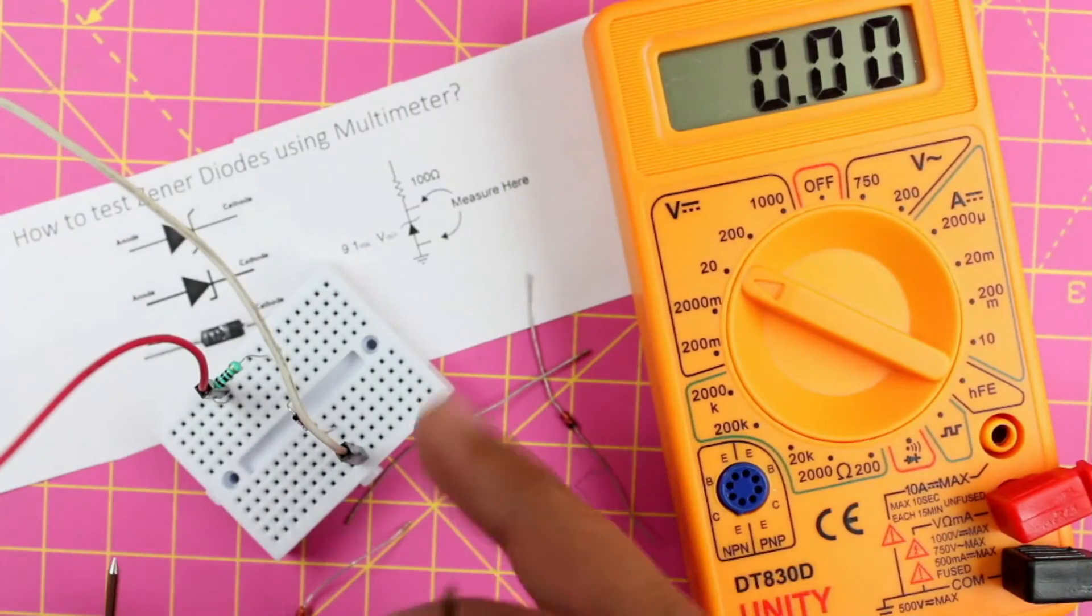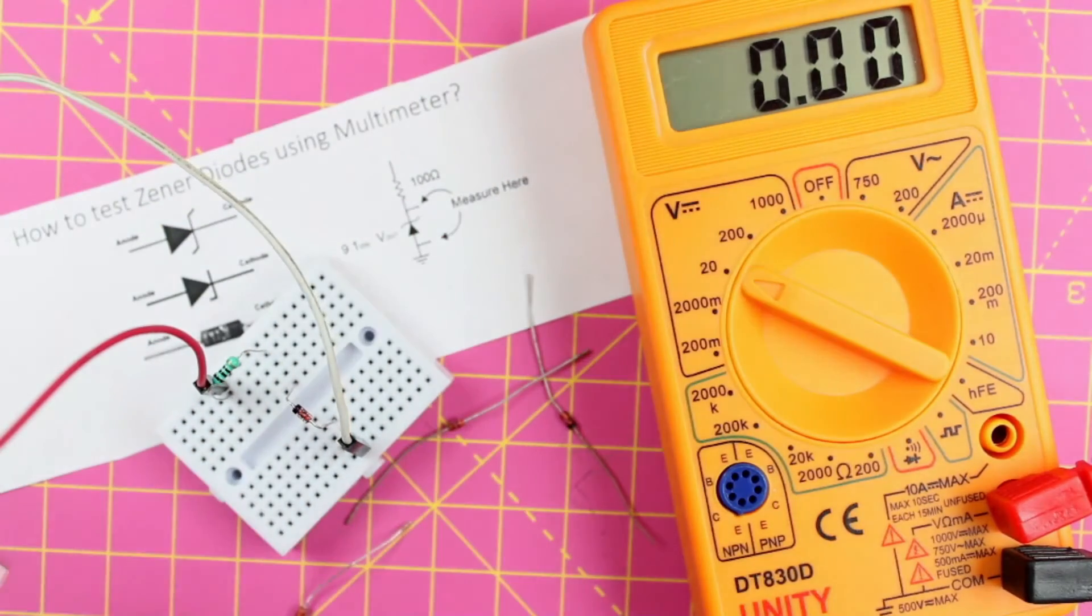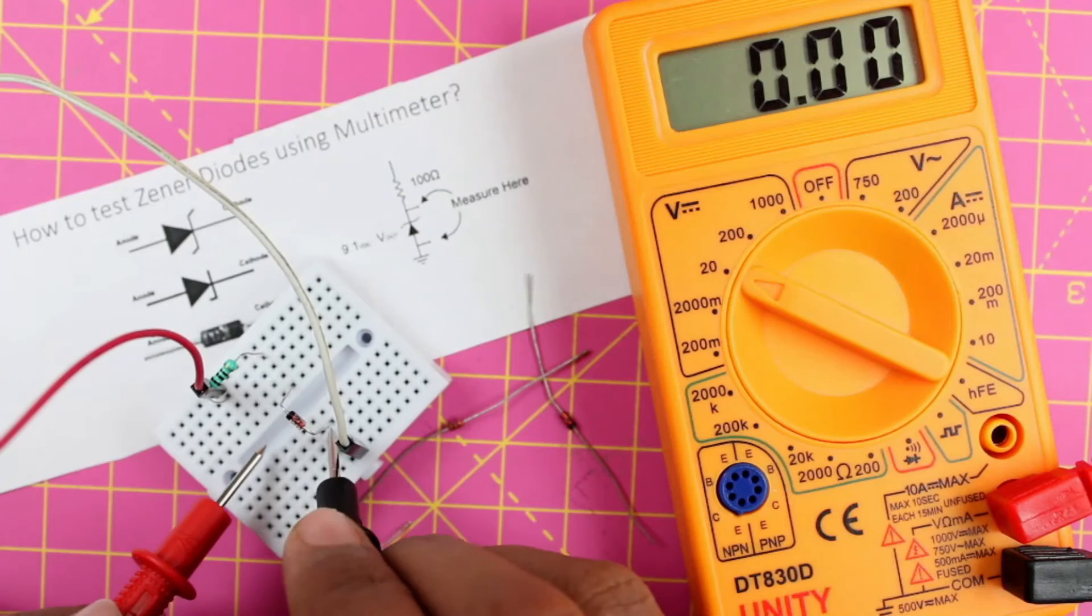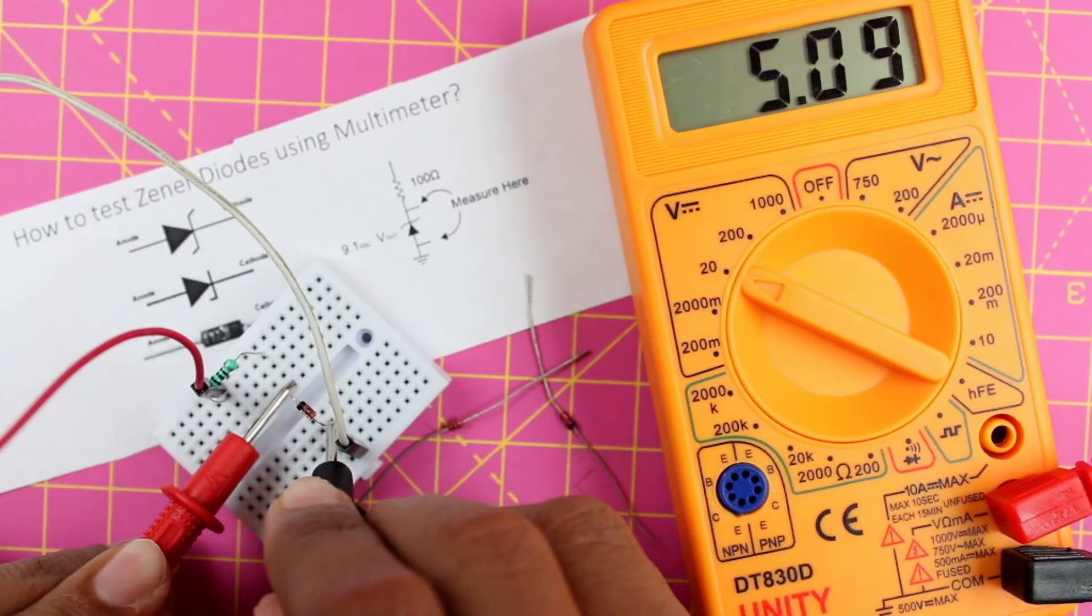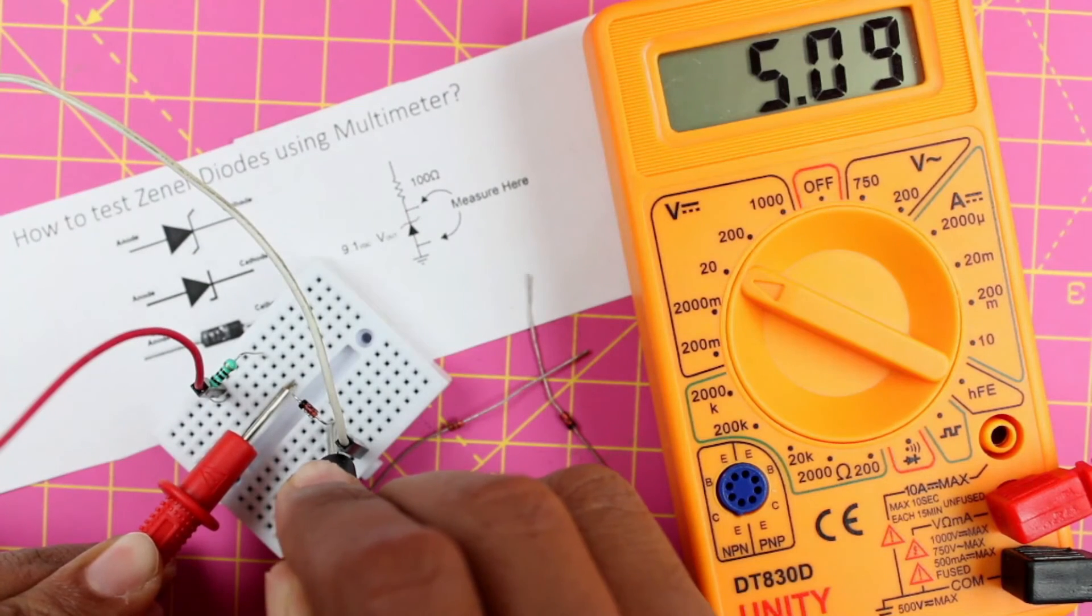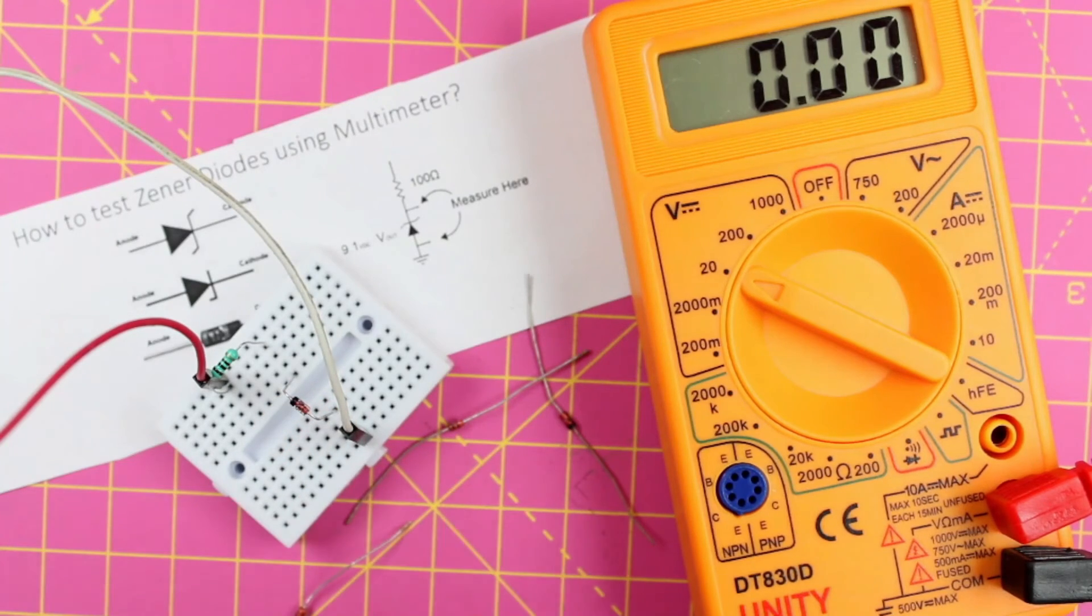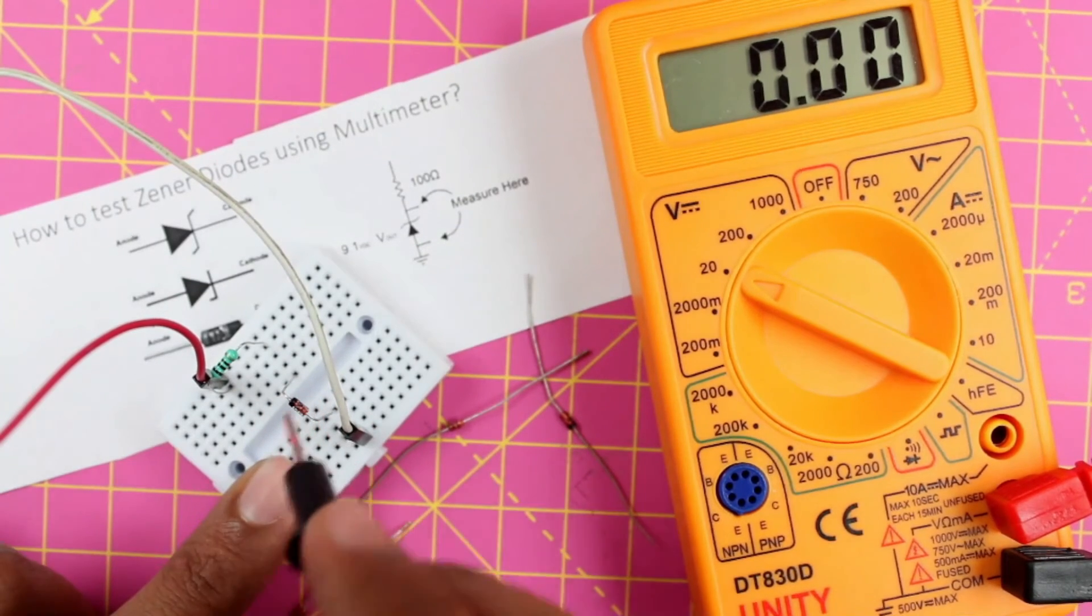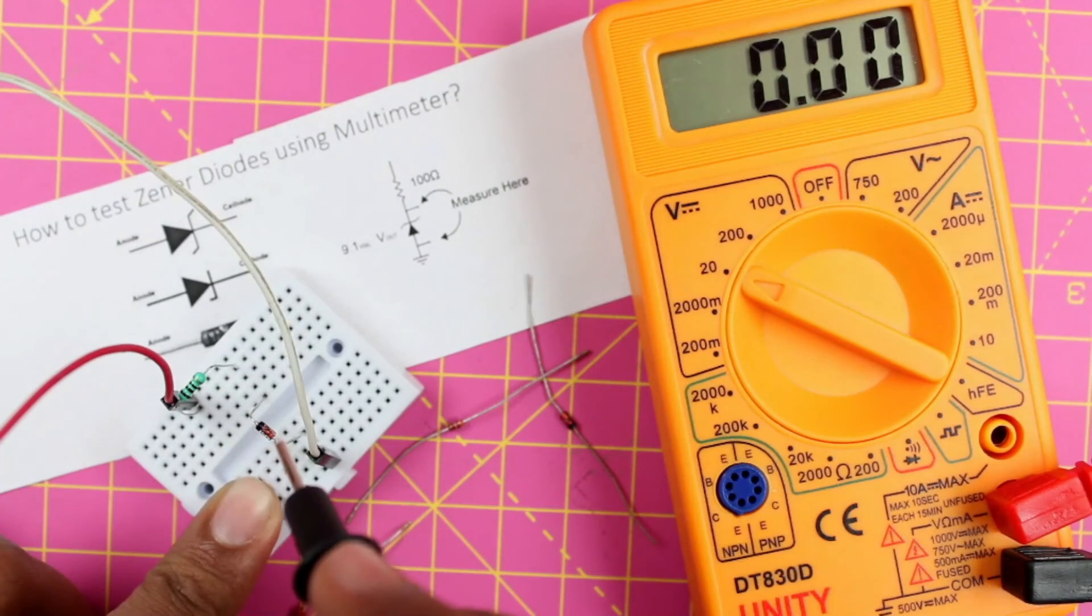Now we know that this is the ground, so we will put our negative probe here and our positive probe here. When I do that you can see that we are getting a voltage drop of 5.09 because this is a 5.1 volt zener diode. Similarly you can use any zener diode here and measure the voltage across it in this setup to figure out what type of zener diode it is.